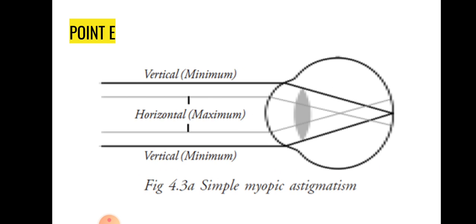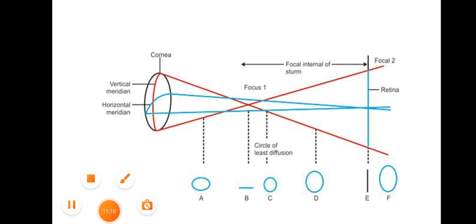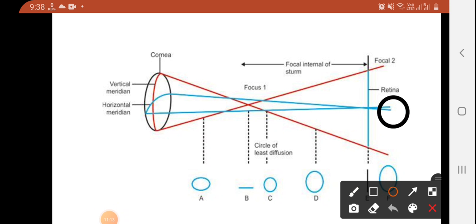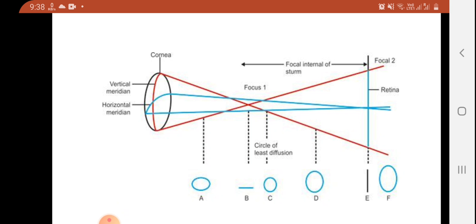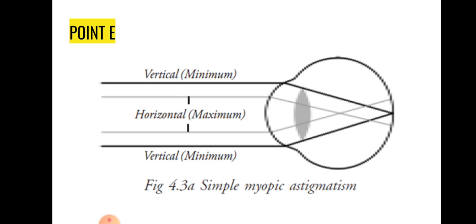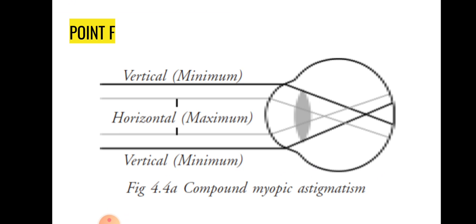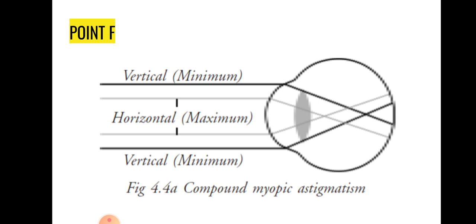At point F, both light rays have now focused and are diverging. The divergence of the vertical meridian light rays is greater than the divergence of the horizontal meridian light rays, but both light rays focus in front of the retina. This indicates compound myopic astigmatism. That's all, friends — thanks for watching, please like the video and subscribe to the channel.